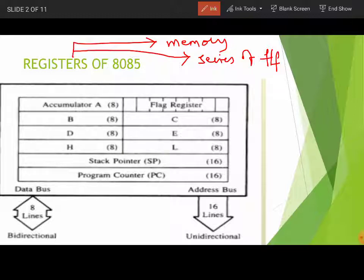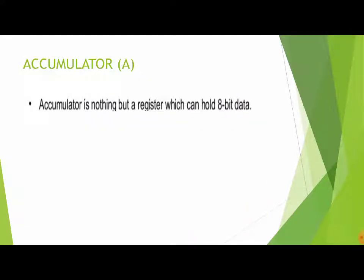If it is an 8-bit register, it will consist of eight flip-flops; if it is a 4-bit register, it consists of four flip-flops. The registers in 8085 are: accumulator, flag register, B, C, D, E, H, and L — all 8-bit registers — stack pointer (16-bit), and program counter (16-bit). It has 16 address lines and 8 data lines.